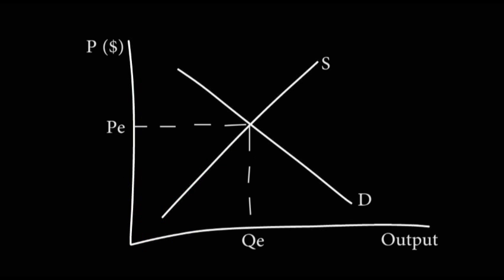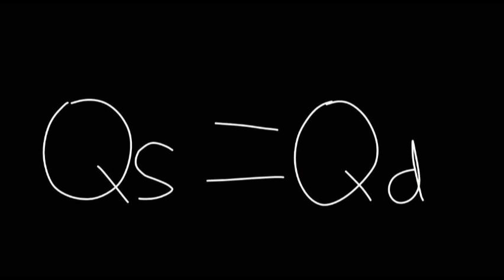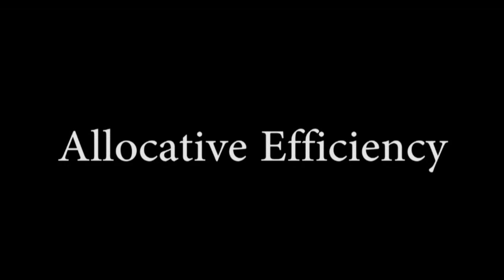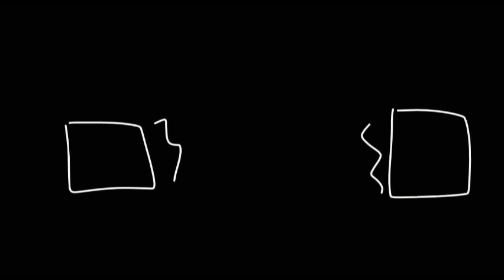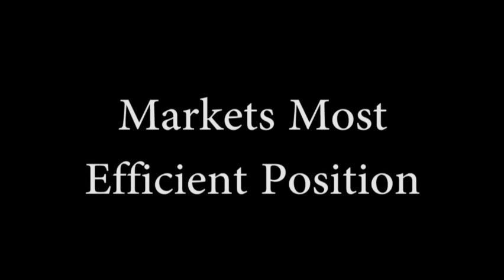We all know that there is a point of equilibrium in a market graph, which is the point where quantity supplied equals the quantity demanded. This can also be called the point of allocative efficiency, which is the point where all resources are allocated most efficiently. It is also known as the market's most efficient point.